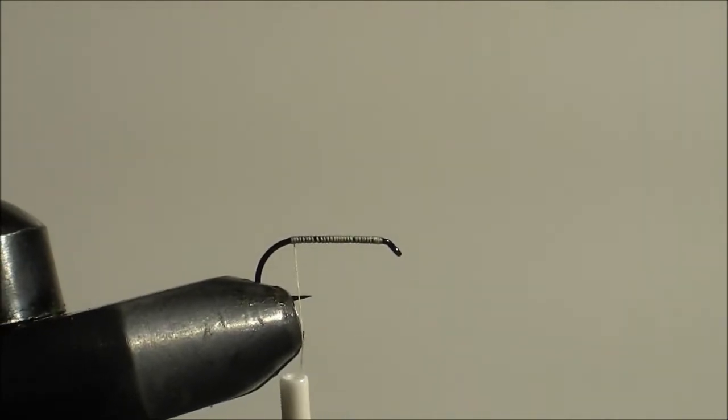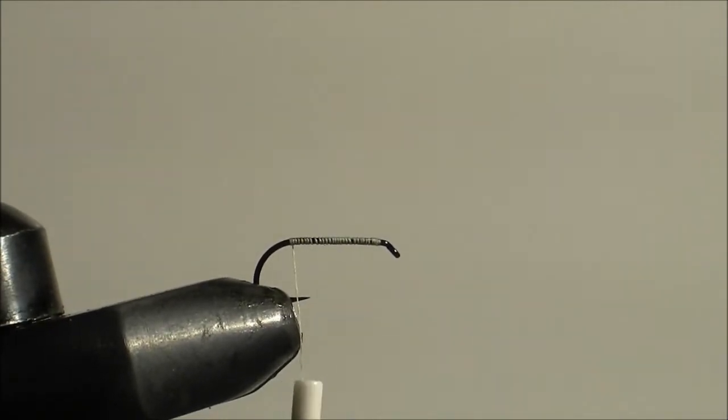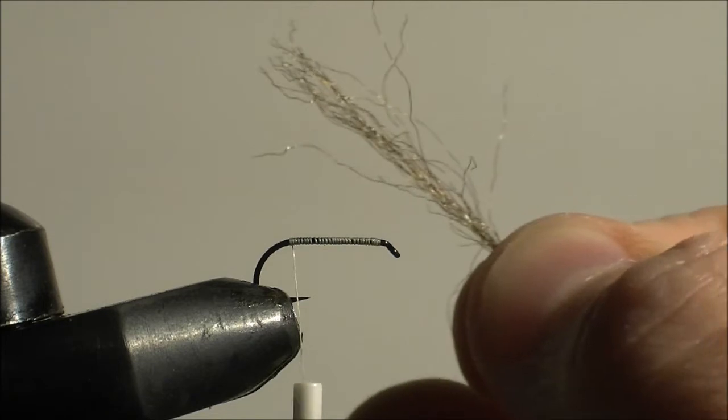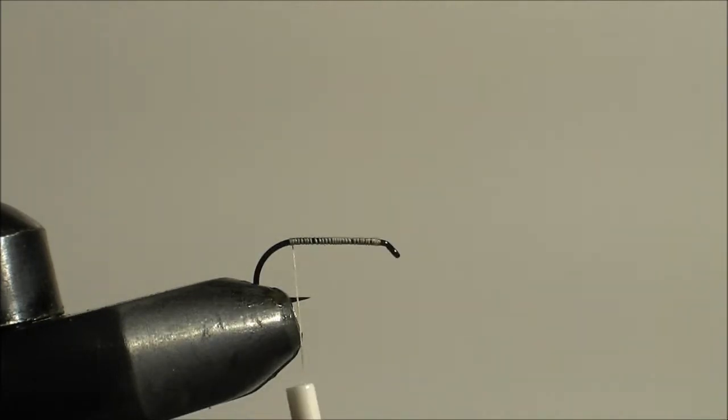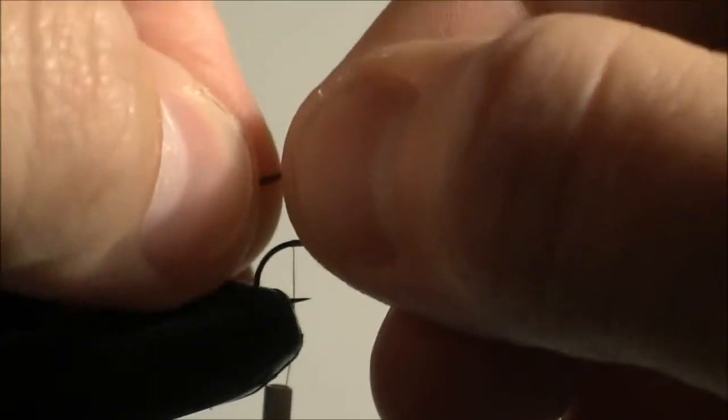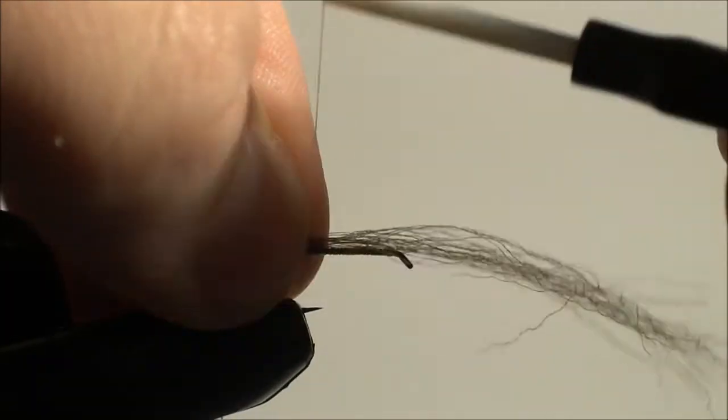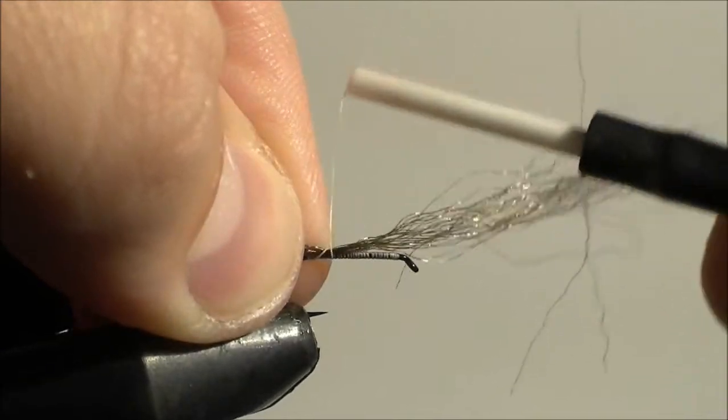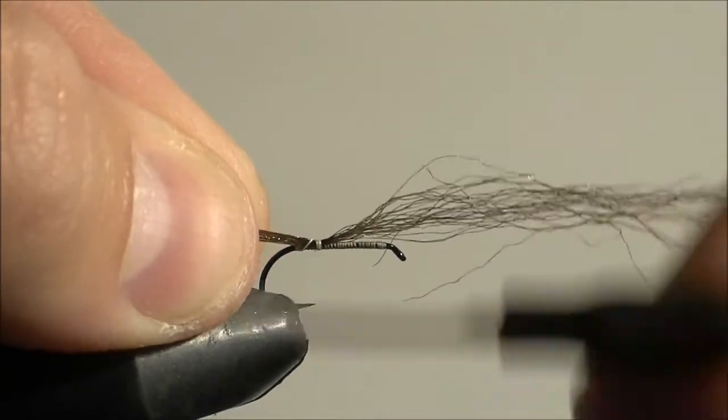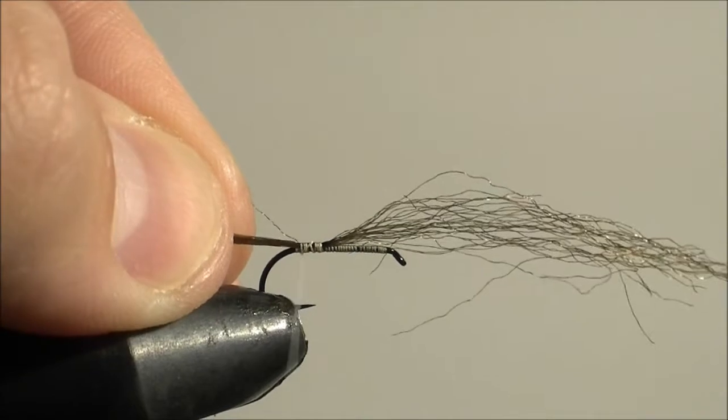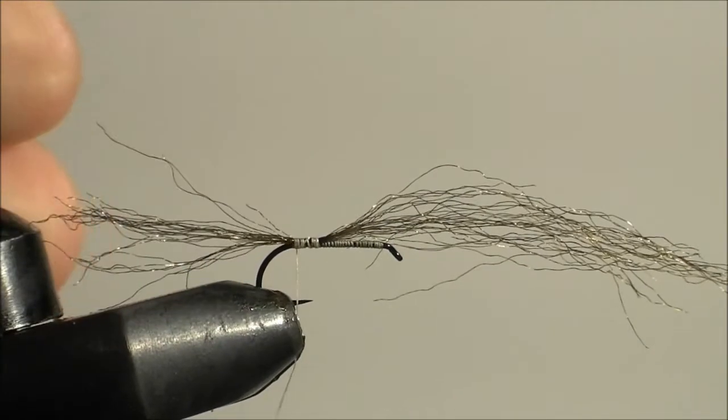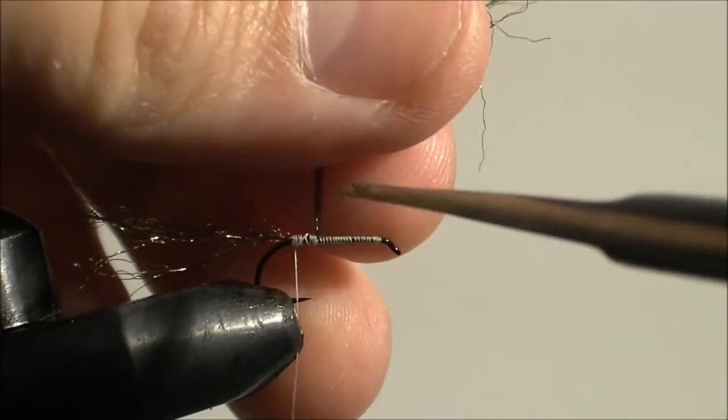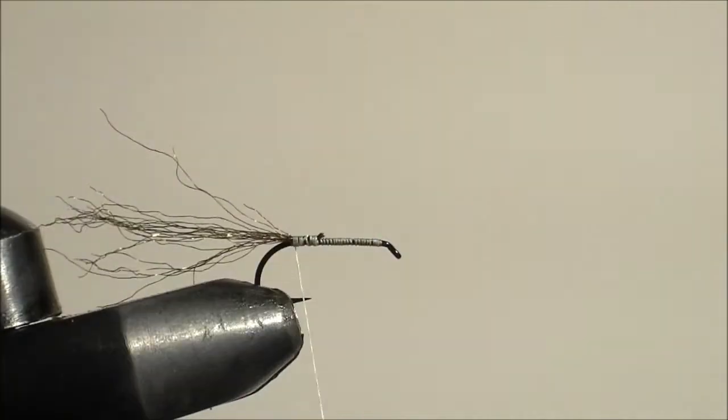I'm trying to get the zoom here correct so that I can get as close as I can. The tailing material will be this Zeelon material, and this is an olive brown. So I'm just going to tie it in first, then I'll clip to size. Just tie it in to the same point where I stopped my thread previously. Trim off the excess.